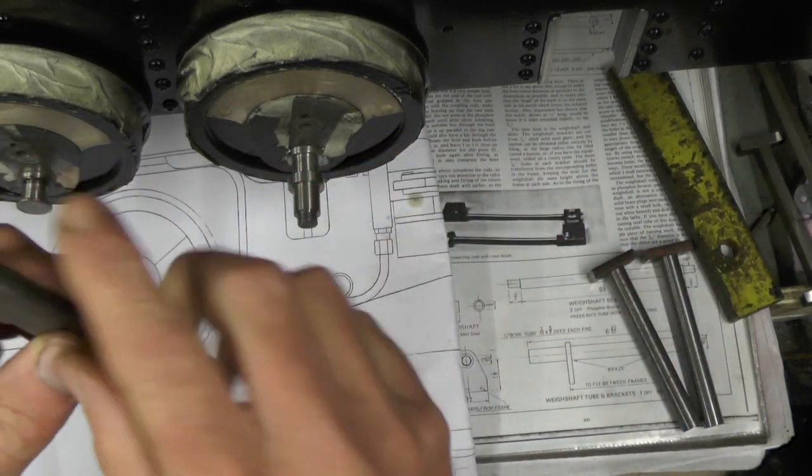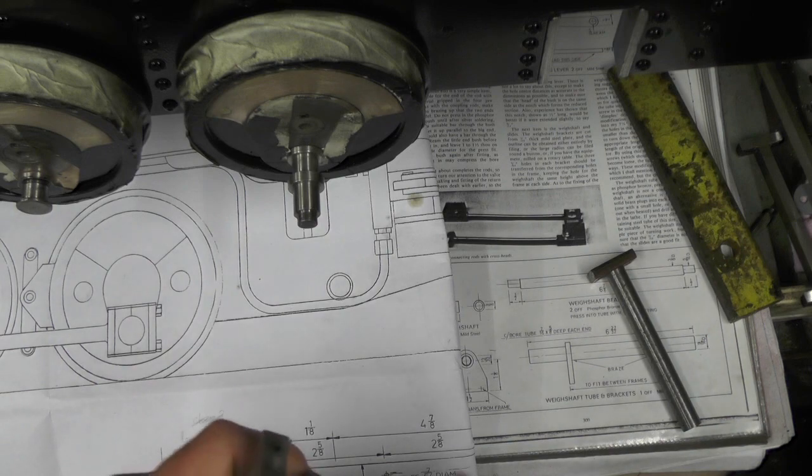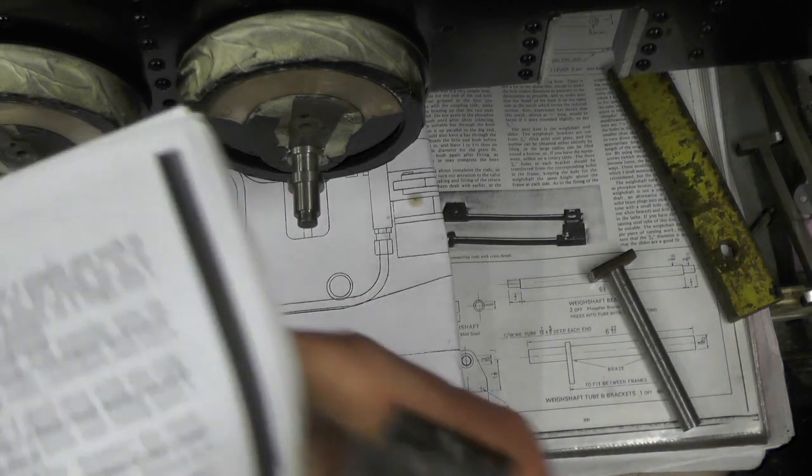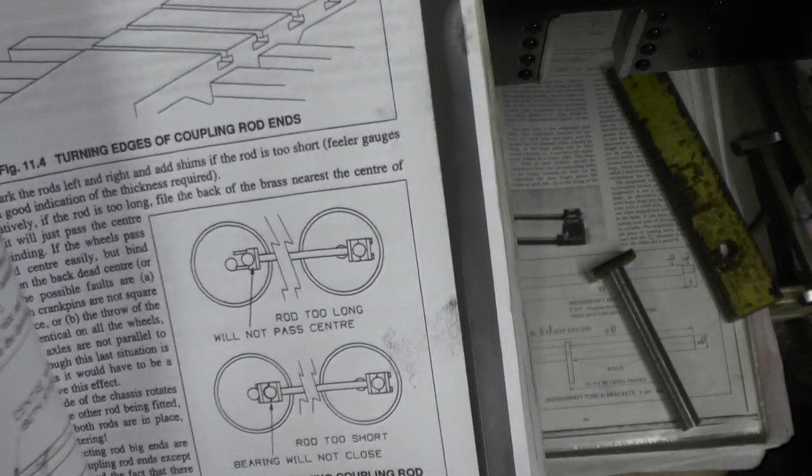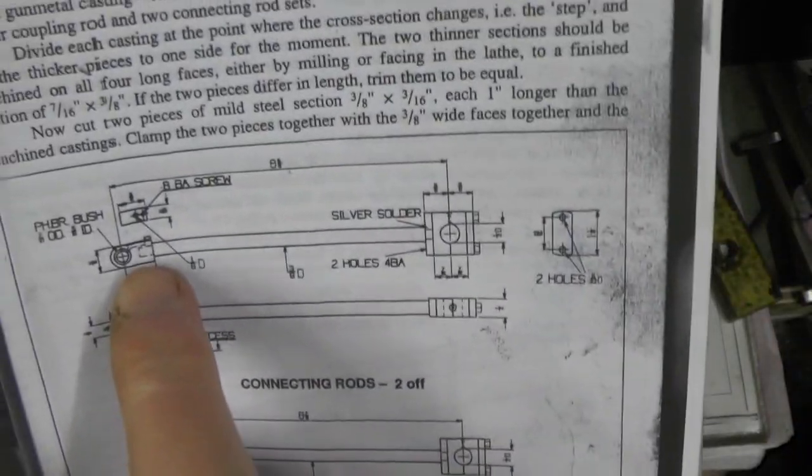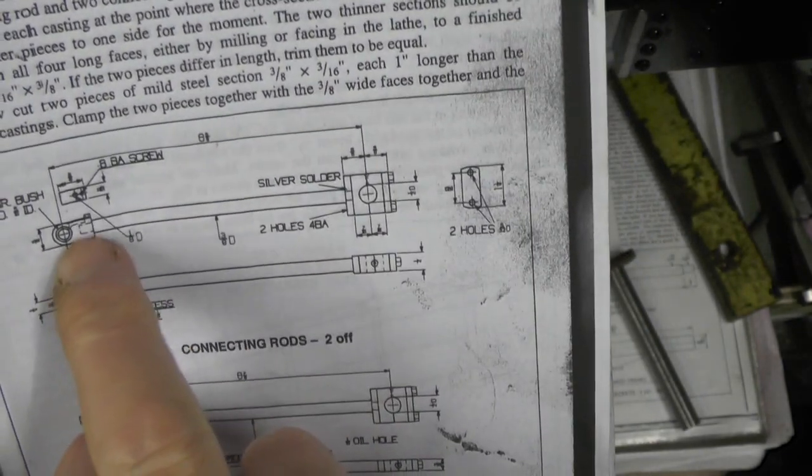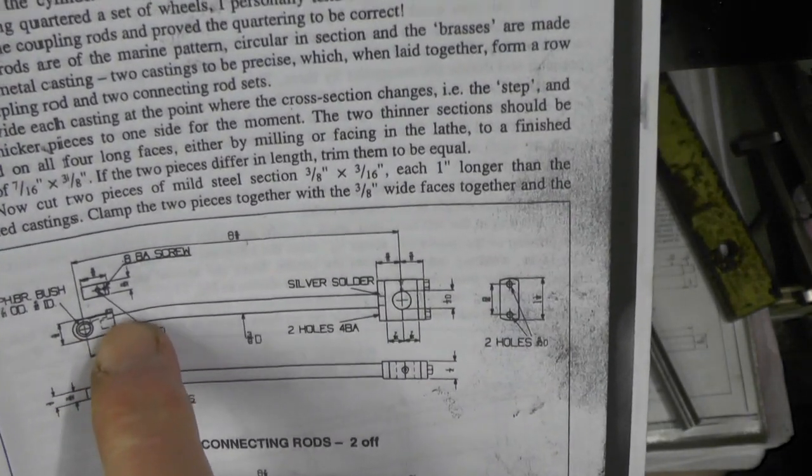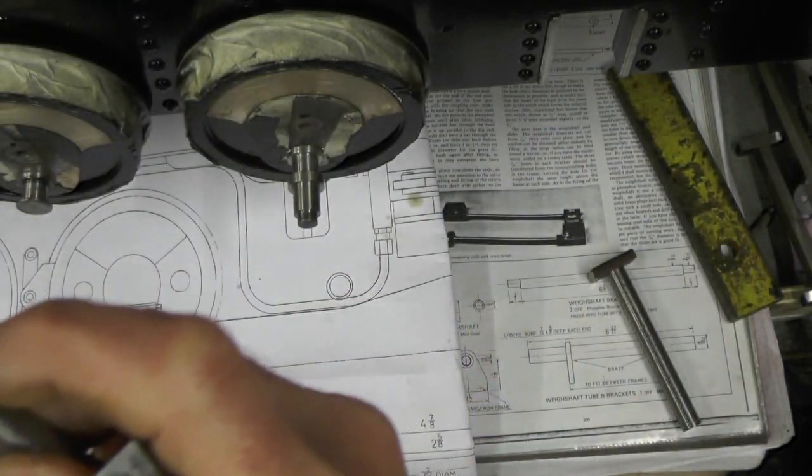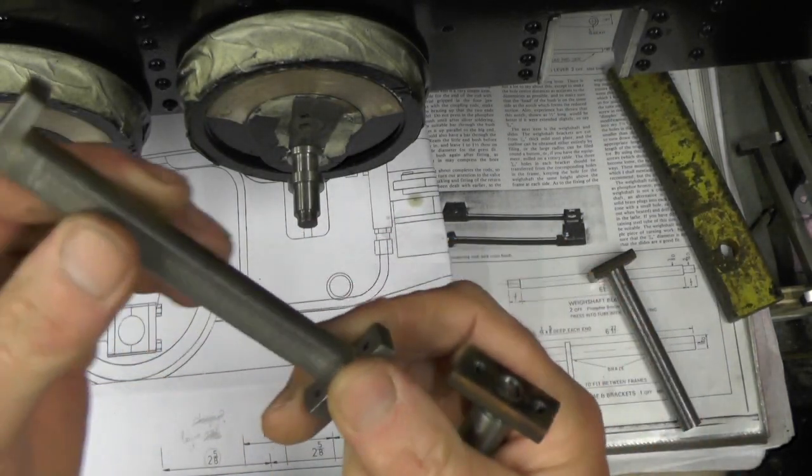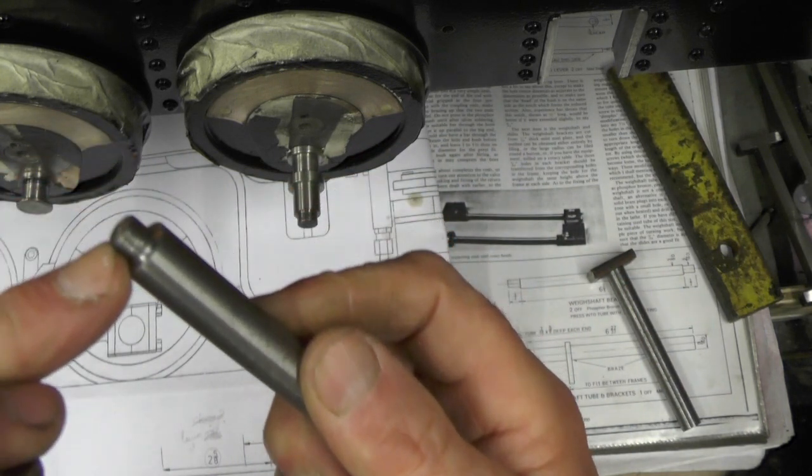So, as you can see, I've got my ends braised on, and this is another little deviation from the drawing. On the drawing, it tells you to turn the diameter on the end, a quarter long by a quarter diameter, and that goes into these ends for it to be braised on. Well, I've belt and braced it. What I've done, I've put a thread on.